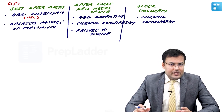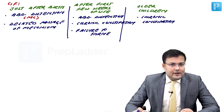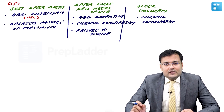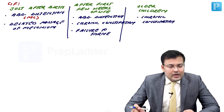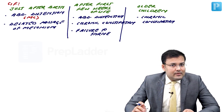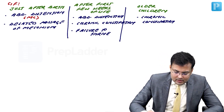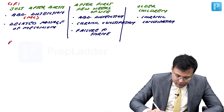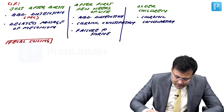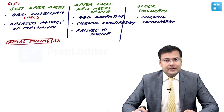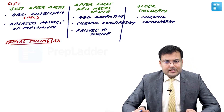Abdominal distension and constipation are features of Hirschsprung's disease. Importantly, fecal soiling is NOT a feature of Hirschsprung's disease — this has been asked many times in exams.